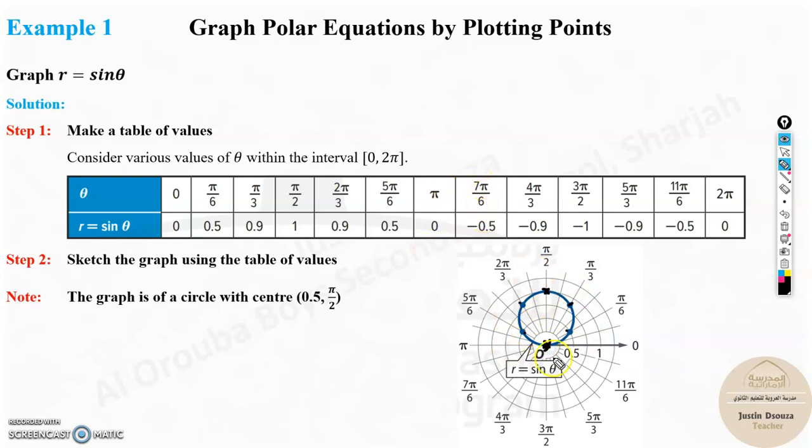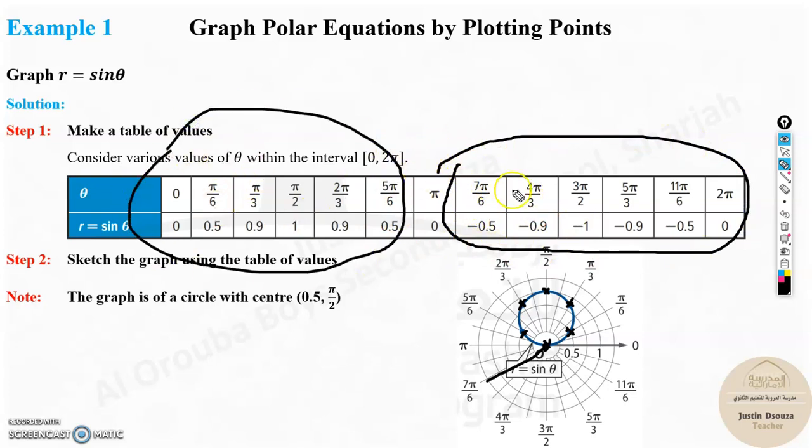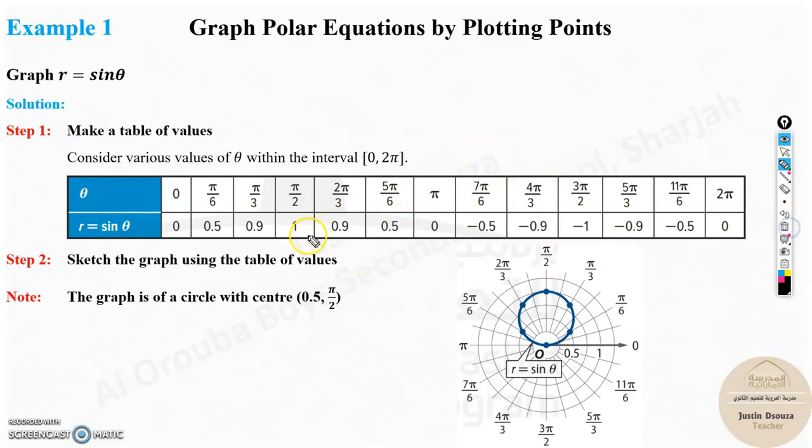What about the next one? 7π/6. 7π/6 is in this line, but look at the value. It's minus 0.5. So you don't mark it here. You mark it in the opposite side. It goes back to this. Again, you get the same points if you're starting to mark. So what you realize is these are repetitive. If you're going to plot this, it's just the same. You do not need to do all these. Just take a few values and plot.